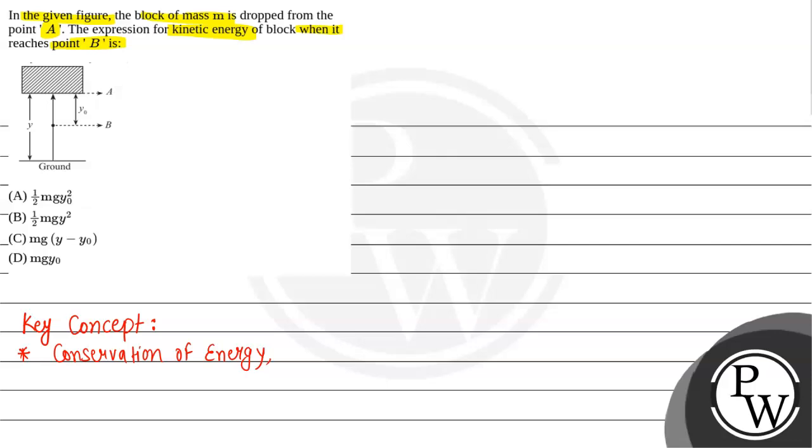Suppose we have point A here and this is point B, moving from this point to this point. The kinetic energy at point A plus potential energy at point A should always be equal to the kinetic energy at point B plus potential energy at point B. This energy should always be conserved.